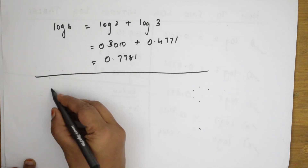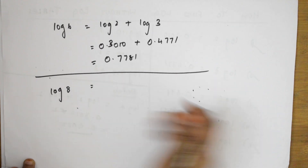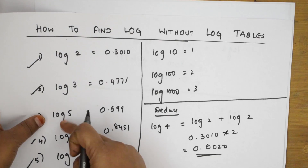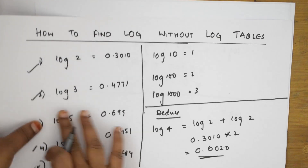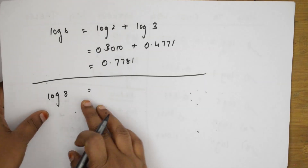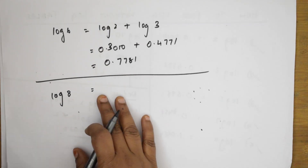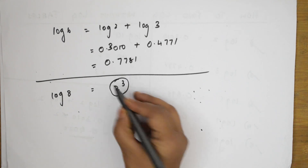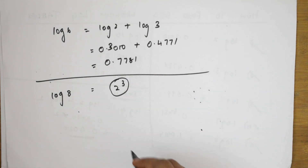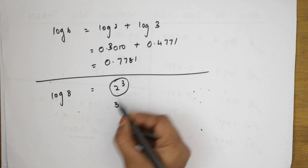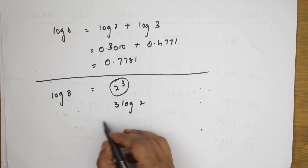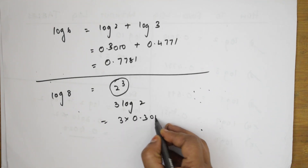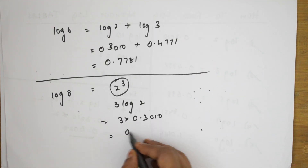I've memorized 2, 3, 5, 7 — I don't have log 6 or log 4 directly, but I can derive them. Similarly, log 8: since 8 = 2³, log 8 = 3 × log 2 = 3 × 0.3010 = 0.9030.